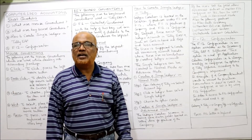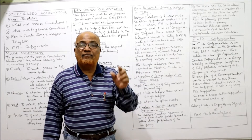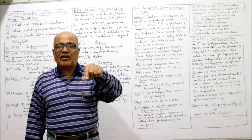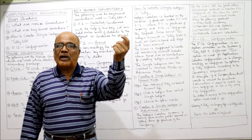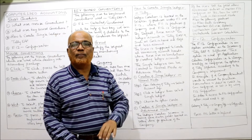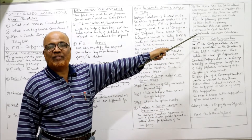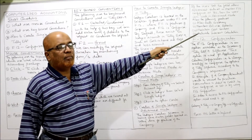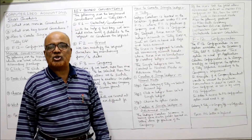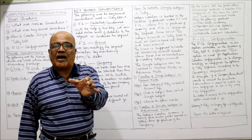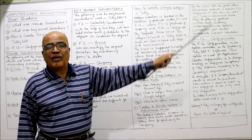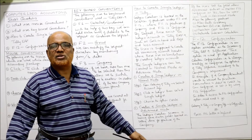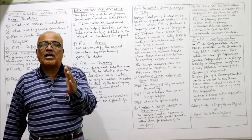If a user wants to create a single ledger in advanced mode, they must go to F12 configuration and select advanced mode as Yes. Then they will have access to extra fields in the account. The extra fields available in advanced mode include: allow multi-currency, maintain bill-wise details, maintain cost centers, and activate interest calculations. If normal mode is kept, these fields will not appear in the accounts.